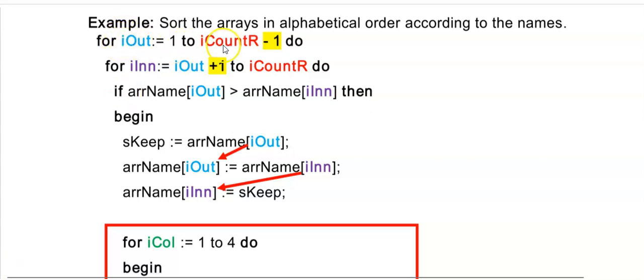The top part here looks the same as I did in one-dimensional arrays. Remember the minus one there to prevent an access violation when you go I out plus one. And then your inner loop starts at I out plus one to the counter. There is a lesson on one-dimensional arrays for the grade 11s where you can revise this. But this code really needs to be studied.